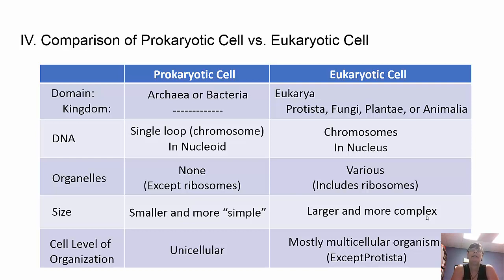Prokaryotic cells are archaea or bacteria; eukaryotic cells are eukarya — protista, fungi, plantae, and animalia. Prokaryotic DNA is a single loop in the nucleoid region; eukaryotic DNA is in chromosomes inside the nucleus. Prokaryotes only have ribosomes; eukaryotes have various organelles. Prokaryotes are smaller and simpler and unicellular. Eukaryotes are larger and more complex, mostly multicellular — except the kingdom Protista, which is mostly unicellular.